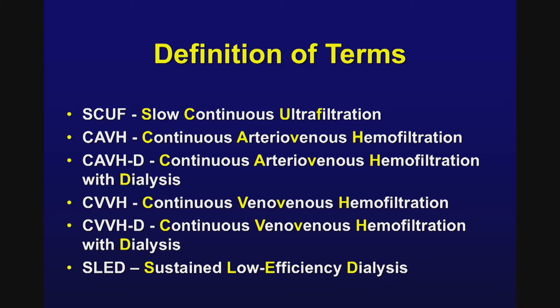Going back, CRRT was a therapy first discovered in Germany in the late 1970s. At that time it was known as SCUF, which stood for slow continuous ultrafiltration — a form of renal replacement therapy mainly used for continuous volume removal in critically ill patients. That evolved over the next four or five years to the early to mid 1980s to a therapy known as CAVH, or continuous arterial venous hemofiltration.